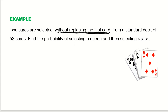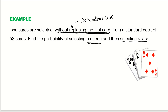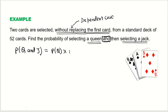We need to find the probability of selecting a queen first and then selecting a jack. Since these are dependent events, we use the formula: P(queen and jack) = P(queen) × P(jack | queen already drawn). The keyword 'and' confirms we use the multiplication rule.